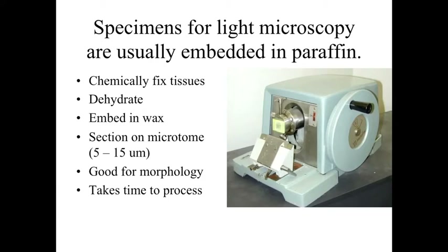Specimens for light microscopy are embedded in paraffin, dehydrated, embedded in wax, and then sectioned using the microtome — usually about 5 to 15 micrometers in thickness. These sections are really good for morphology; they're great for looking at the anatomical structures within the biological tissue. However, it takes a fair amount of time to process — it can take days to prepare tissues in this way.